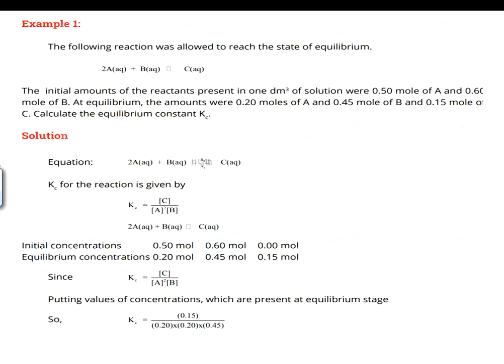Now the next example from your textbook shows what kind of questions come from this. In the example question, the following reaction was allowed to reach the state of equilibrium in which two moles of A react with one mole of B to give one mole of C. First, you write this equation, 2A + B ⇌ C. Now this is the Kc expression. The number of moles which take part in the balanced chemical equation was 2.